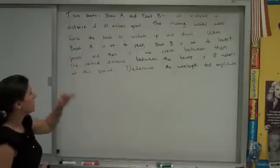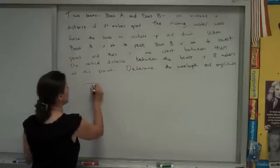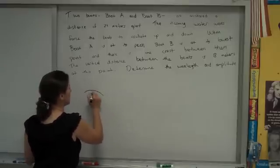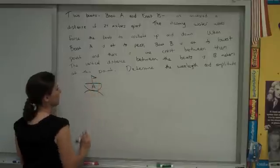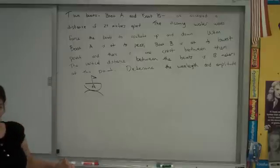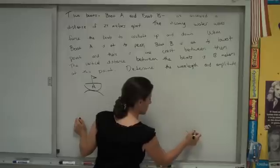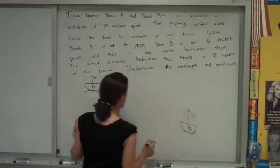So let's start with boat A. We know it's at the highest point when boat B is at the lowest point. So let's kind of put boat A up here. And we'll label that A. And meanwhile, boat B is at the bottom. So we'll just pick a spot for boat B and maybe put it there. And that's boat B, the bottom down there.